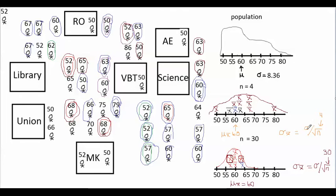But even if I don't calculate the standard error, I know I want it to be low, because I want to be drawing from the distribution of possible samples that's accurate and close to the population mean. And I know that the standard error will be smaller if I'm either sampling from a population with less dispersion or taking a bigger sample size.